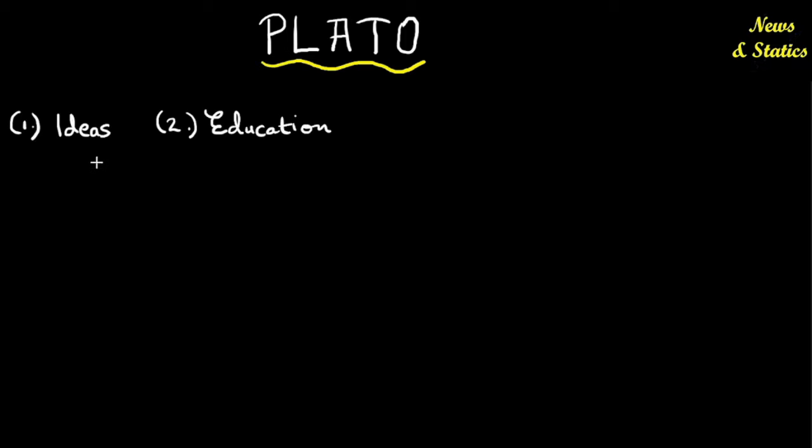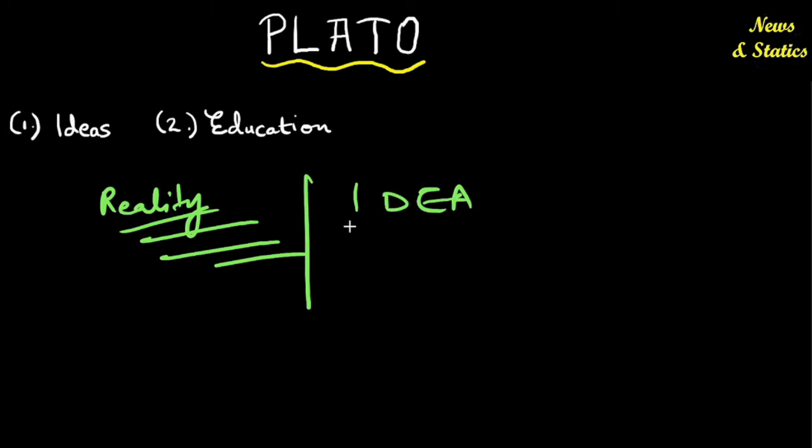Socrates believed that reality is nothing but the shadow of idea. In other words, idea is real. Reality itself is not real. He gave his allegory of caves in order to support his claim with an example. And that's why he is called an idealistic thinker.